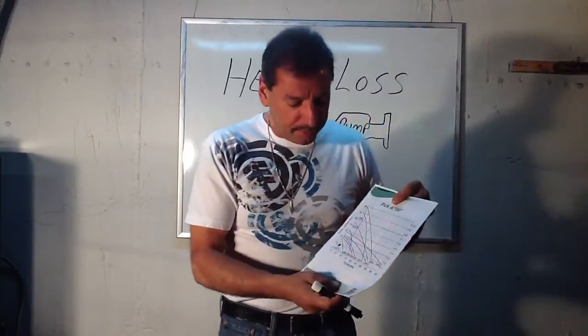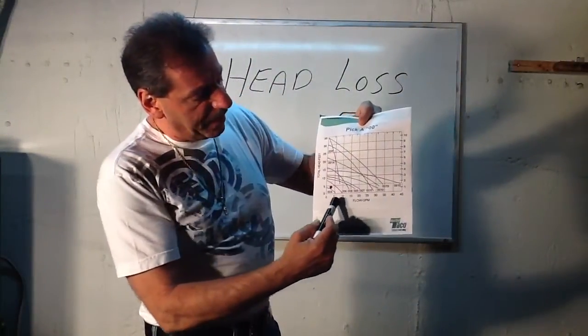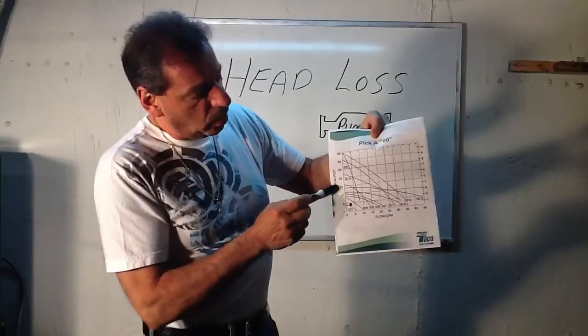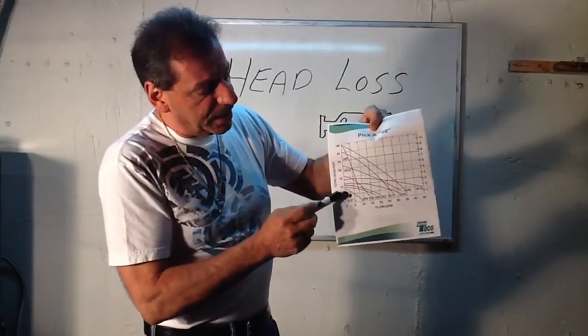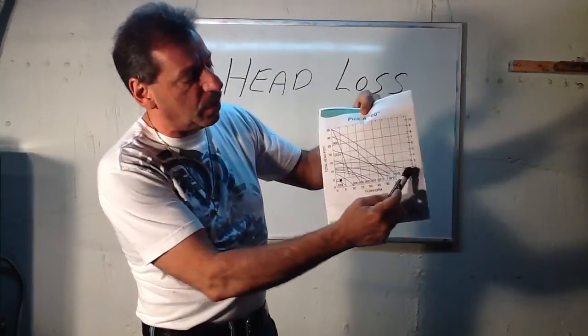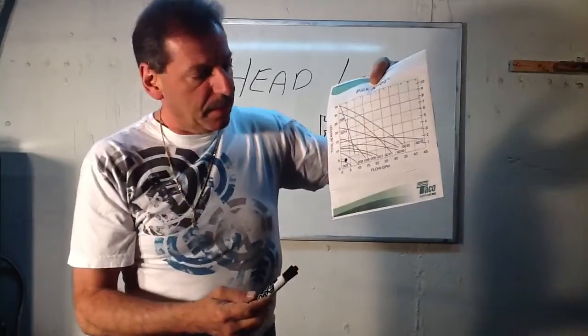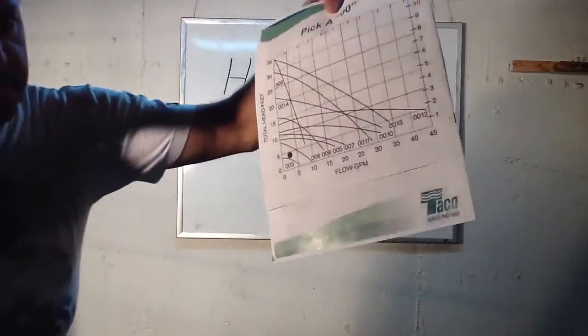The chart simply has flow rate on the bottom and total head loss on the side, and those are numbers here and numbers here, and then a pump curve chart showing what the pump is capable of doing, the different pumps. And I'll bring it closer so you can see, let's see here, I'll do it this way.